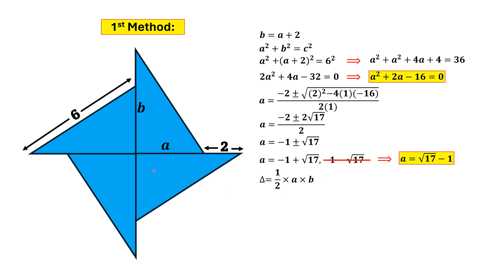Since area of the triangle is equal to half times of its legs, that are a and b. Here a is equal to √17 - 1, and b is a + 2, so that is equal to √17 + 1. Using the famous identity (a - b)(a + b) = a² - b²,